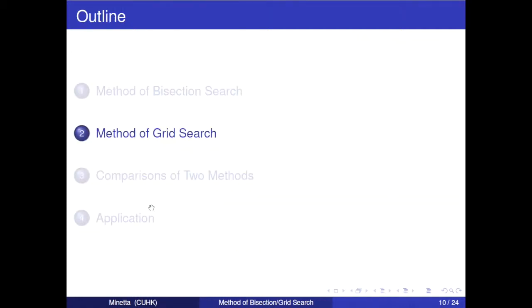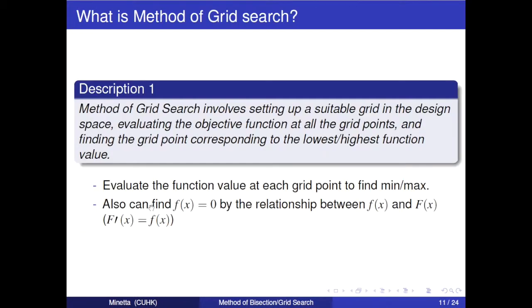Then, we go to the second part. Besides method of bisection search, method of grid search is also a useful method. It involves setting up a suitable grid in the design space, evaluating the objective function at all the grid points, and find the grid points corresponding to the minimum or maximum. In a word, it evaluates the function value at each grid point to find minimum or maximum.